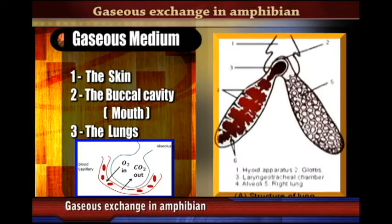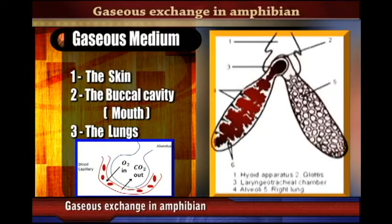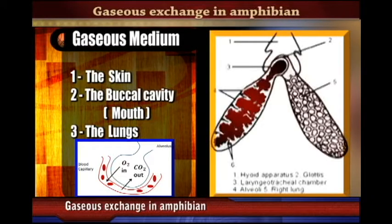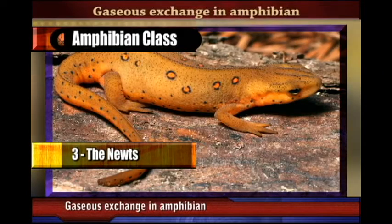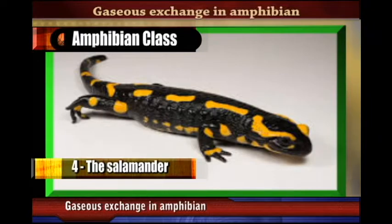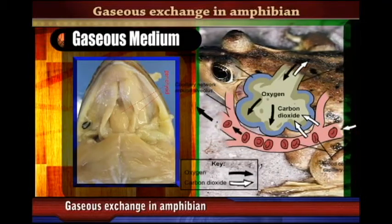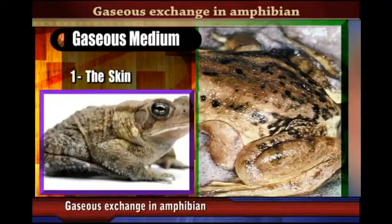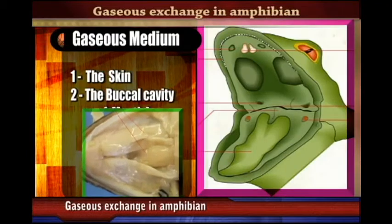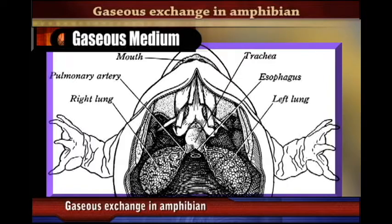The organisms in the class Amphibia include frogs, toads, newts, and salamanders. Gaseous exchange in their bodies takes place in three body parts: the skin, the mouth cavity, and the lungs. We are going to look at how gaseous exchange takes place in each of these systems.